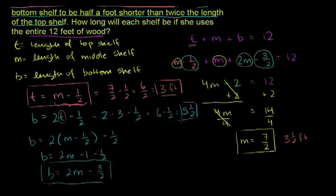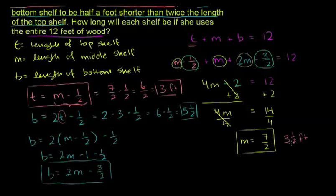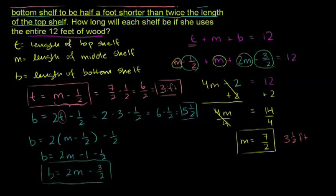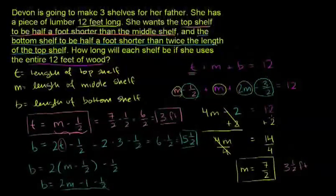We can verify these add up to 12: 5 and 1/2 plus 3 and 1/2 is 9, plus 3 is 12 feet. It also meets all the other constraints — the top shelf is half a foot shorter than the middle shelf, and the bottom shelf is half a foot shorter than twice the top shelf. We know the lengths of the shelves Devon needs to make.